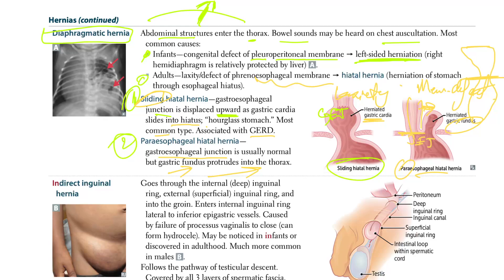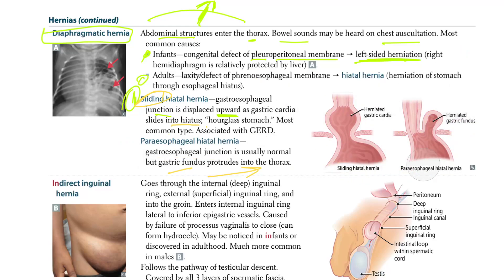The phrenoesophageal membrane connects to the diaphragm on each side and is connected to the esophagus. GERD is importantly associated with sliding hiatal hernias.